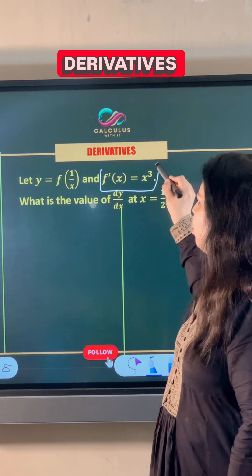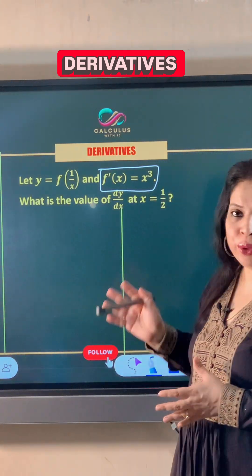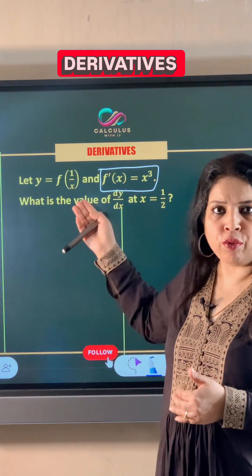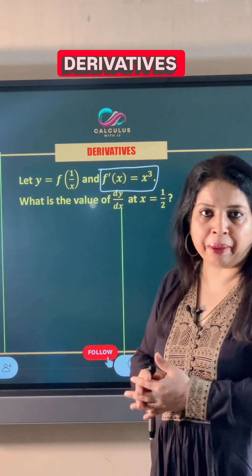f dash x means first order derivative of f x with respect to x. We have to find the value of dy by dx at x equals 1 by 2.